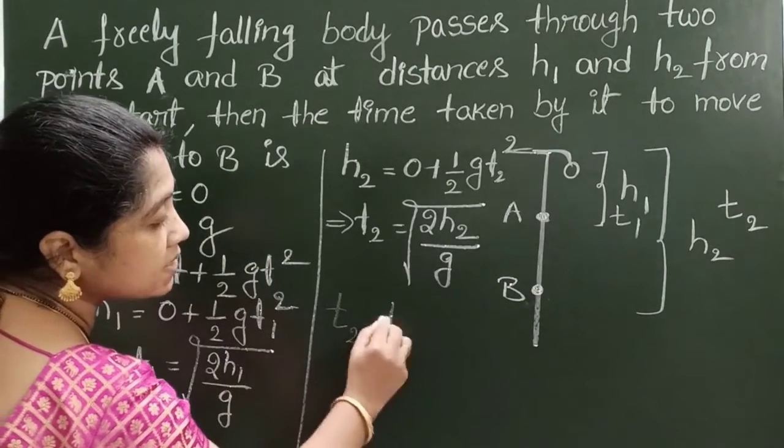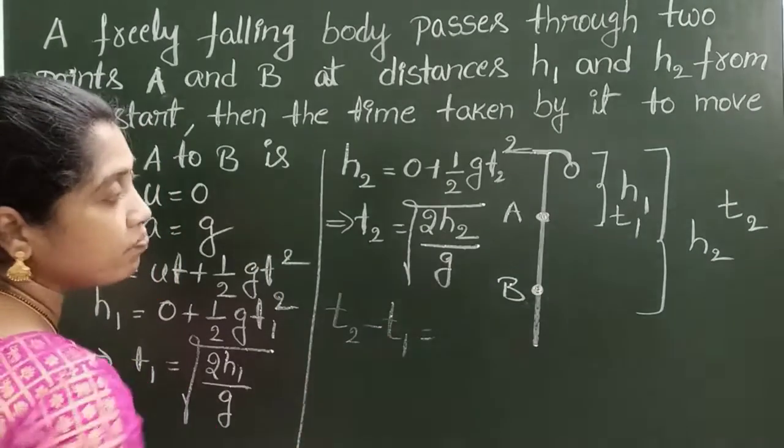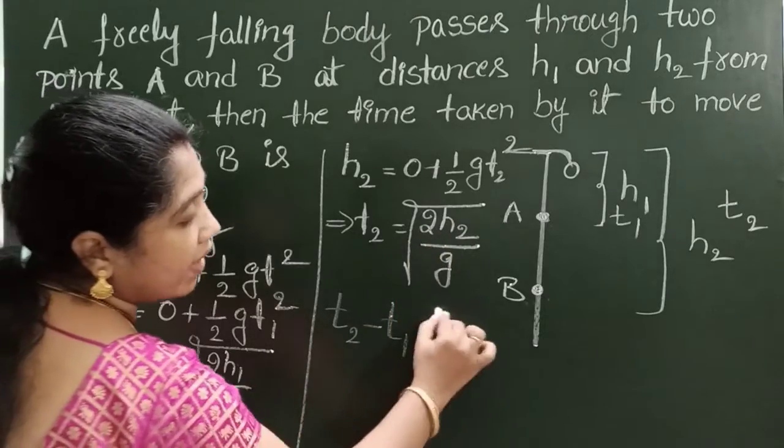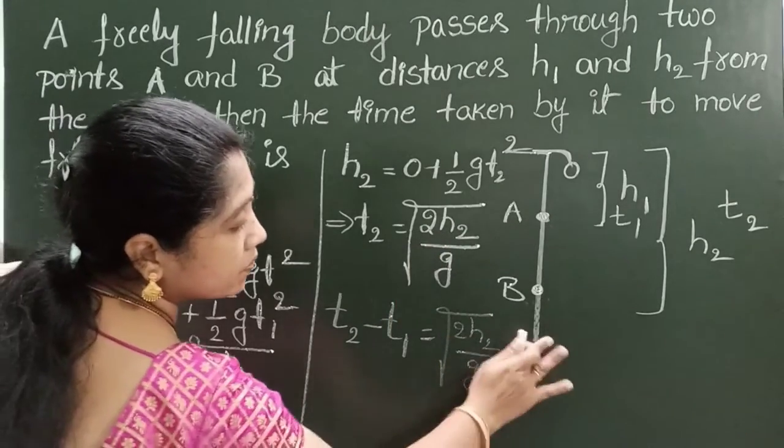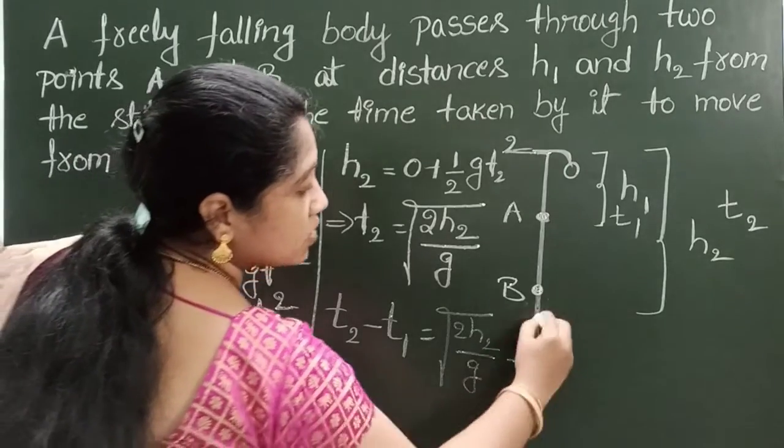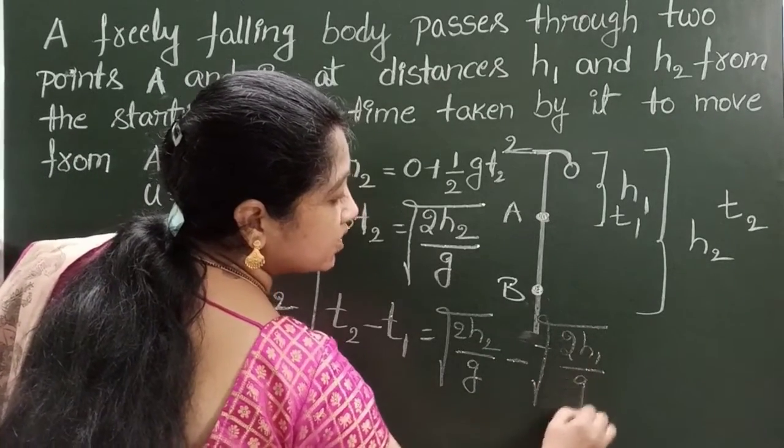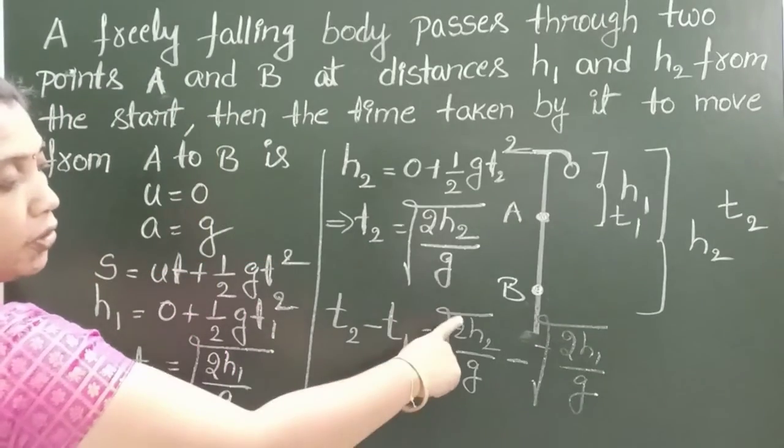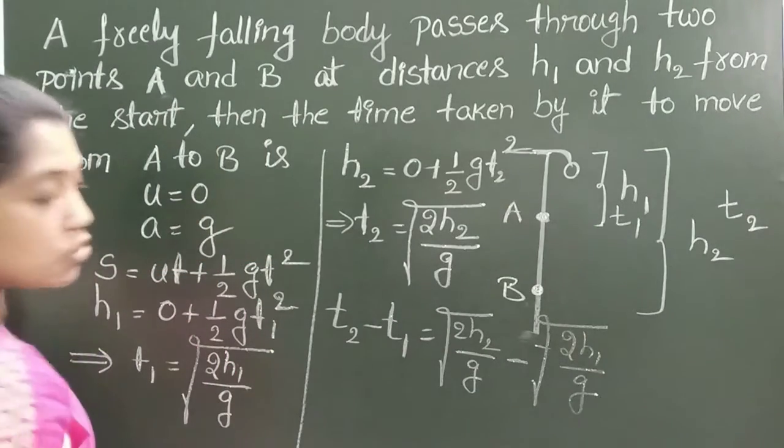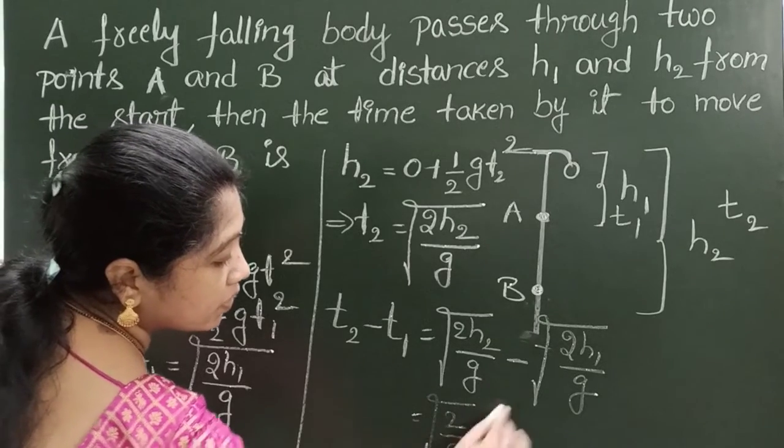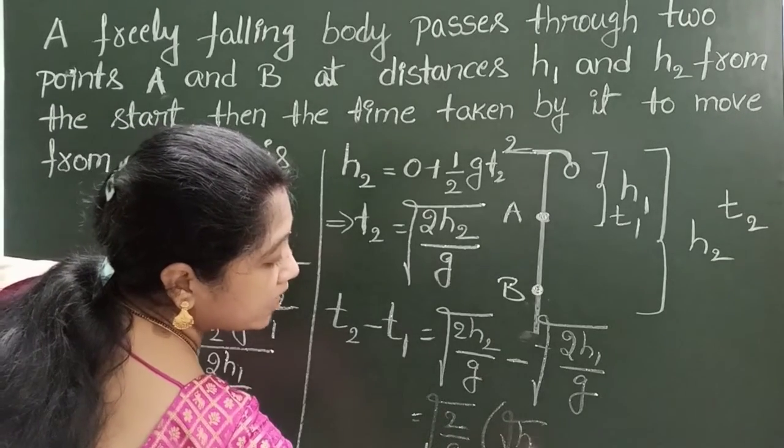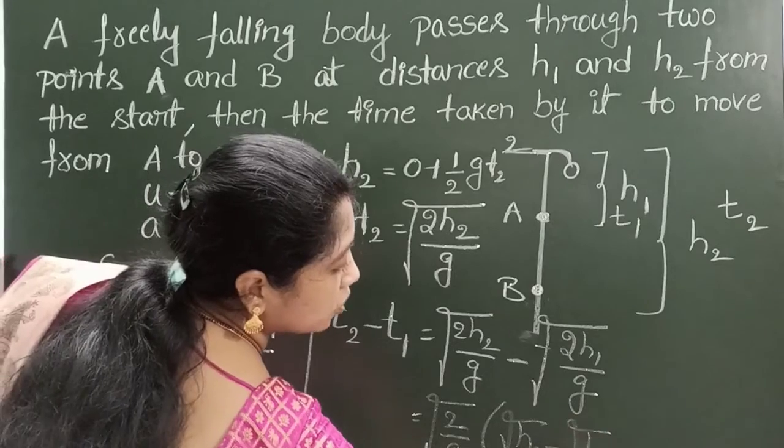T2 minus T1 equals square root of 2H2 by g minus square root of 2H1 by g. Here root 2 by g is common in these two terms.